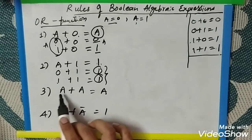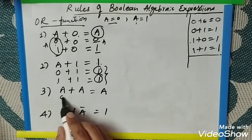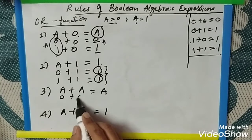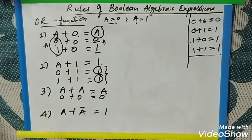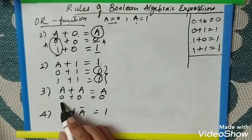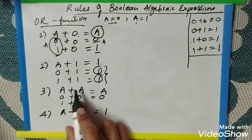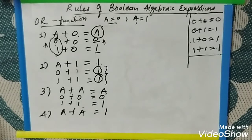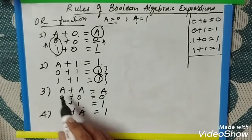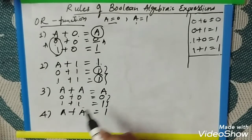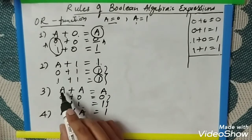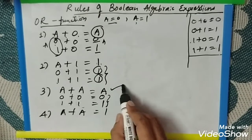Next, A plus A. If you take 0, again you have to take 0, so answer is again 0. 0 OR with 0 is 0. If you take 1, 1 OR with 1 is again 1. That means whatever you are giving A, you are getting the same output. So A is repeating. A plus A is always A.